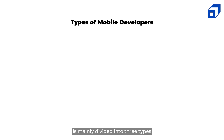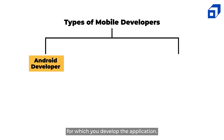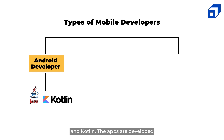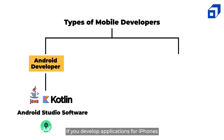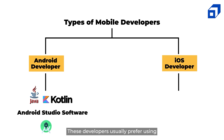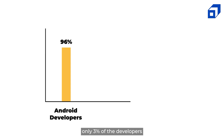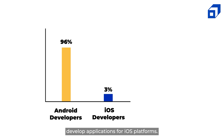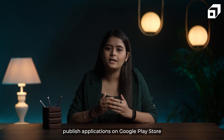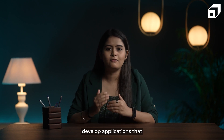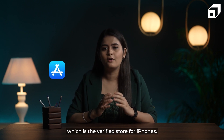Mobile application development is mainly divided into three types based on the operating system. If you are developing for the Android platform, you will be called an Android app developer — you mainly need expertise in Java and Kotlin, and apps are developed using Android Studio. If you develop applications for iPhones, that is the iOS platform, you will be called an iOS developer; these developers usually prefer C and Swift. In India, there are 96% Android developers, while only 3% develop applications for iOS. Android developers publish applications on Google Play Store, while iOS developers publish to the App Store.